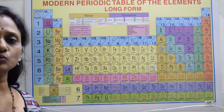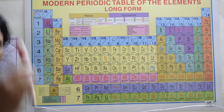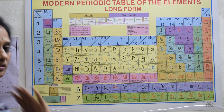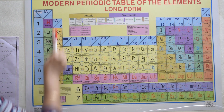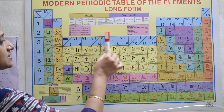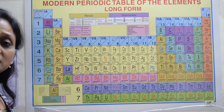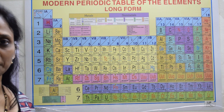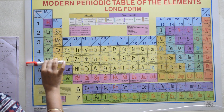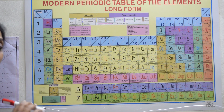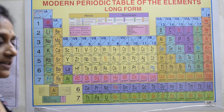The periodic table contains two important structural divisions: vertical columns and horizontal rows. There are 18 vertical columns in total. There are 7 horizontal rows in total.